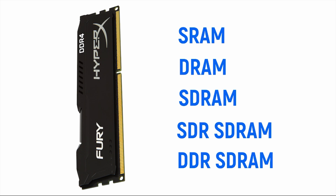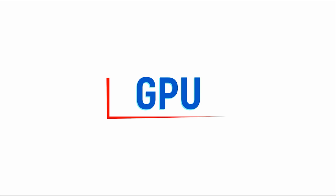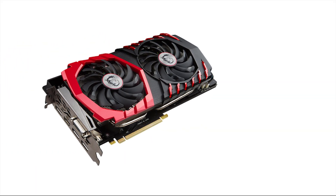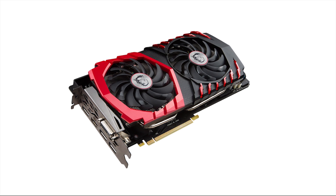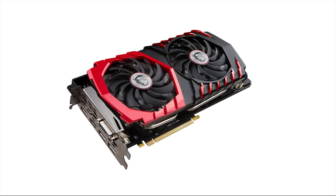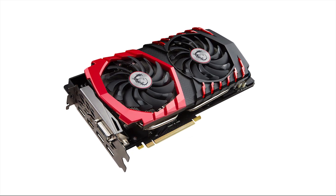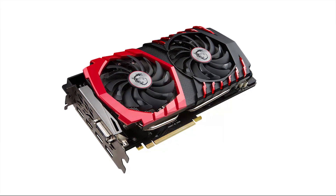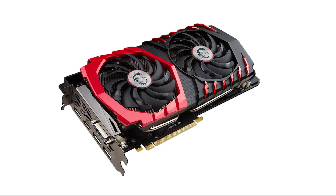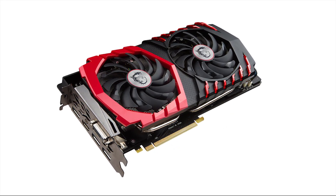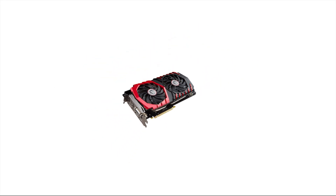GPU. Graphics processing unit is a specialized electronic circuit designed to rapidly manipulate and alter memory to accelerate the creation of images in a frame buffer intended for output to a display device.